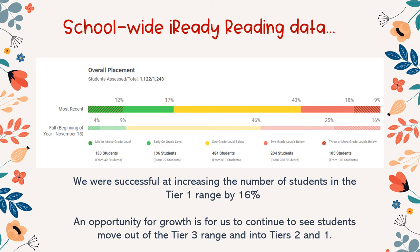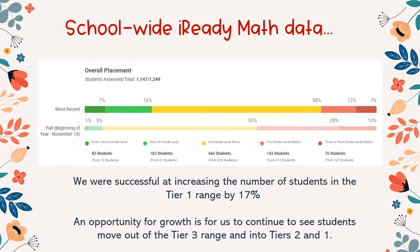Looking at our school-wide iReady reading data, we were successful at increasing the number of students in the Tier 1 range by 16 percent from the fall to the winter benchmark. An opportunity for growth is to continue to see students move out of the Tier 3 range and into Tiers 2 and 1. For our school-wide iReady math data, we increased the number of students in the Tier 1 range by 17 percent, with the same opportunity for growth out of Tier 3.